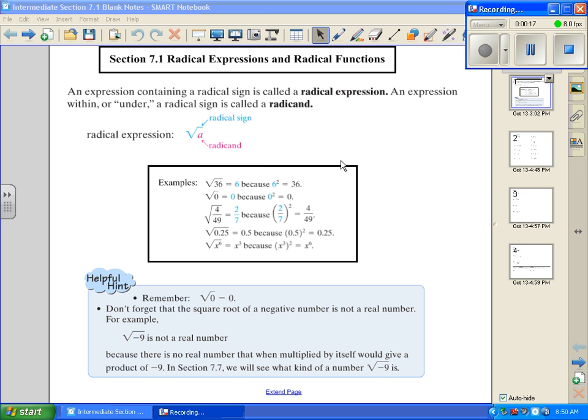A few of these examples real quick as we're going to be working with square roots. The square root of 36 is 6 because 6 squared equals 36. The square root of 0 is 0 because 0 squared equals 0. And then we have this fraction. Square root of 4 is 2, square root of 49 is 7, so 2 sevenths. And the reason is because these values squared give us that value, give us our radicand.